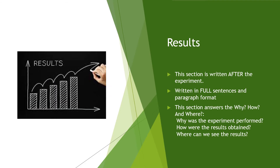The results section of your written lab is written after you have completed the experiment. It is written in full sentences and a paragraph format, although it may also contain data tables and images depending on the course. For example, you might include an image of a machine for engineering, a data table for biology, or a graph for a math lab.